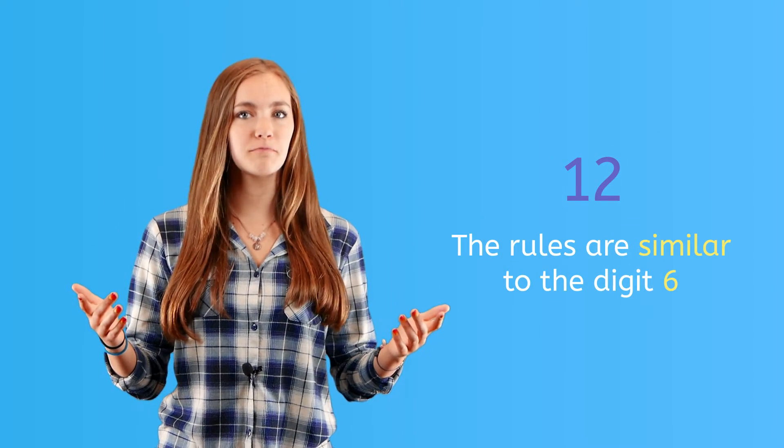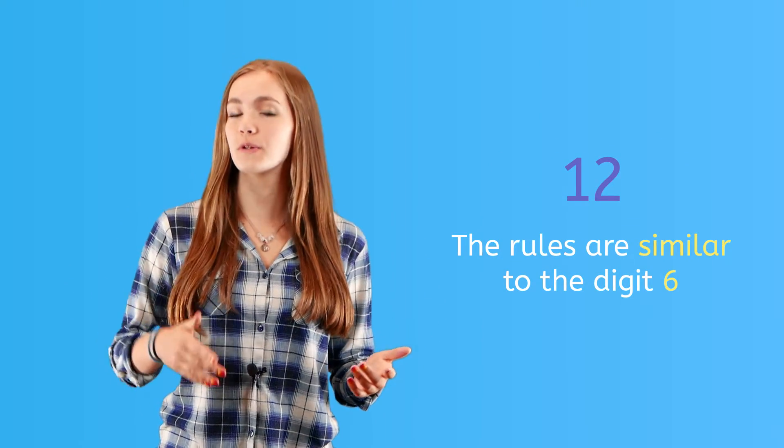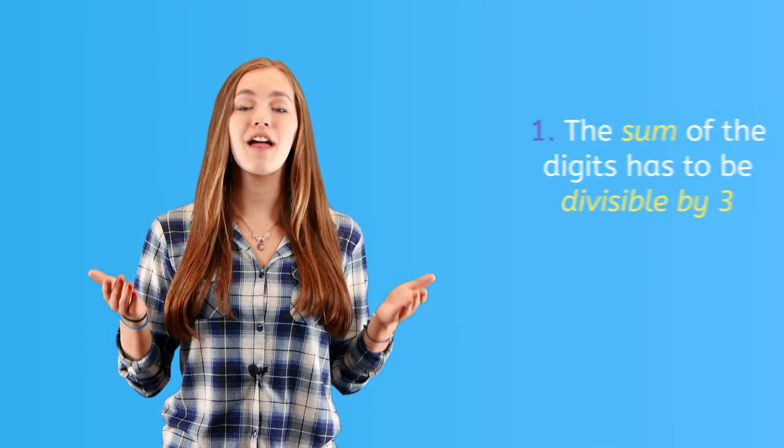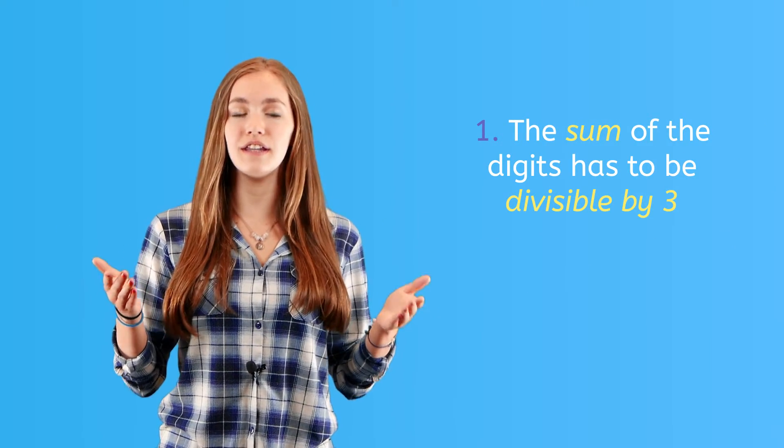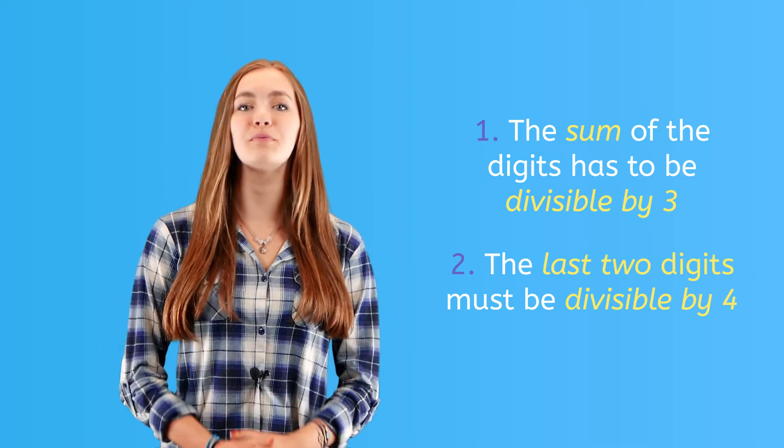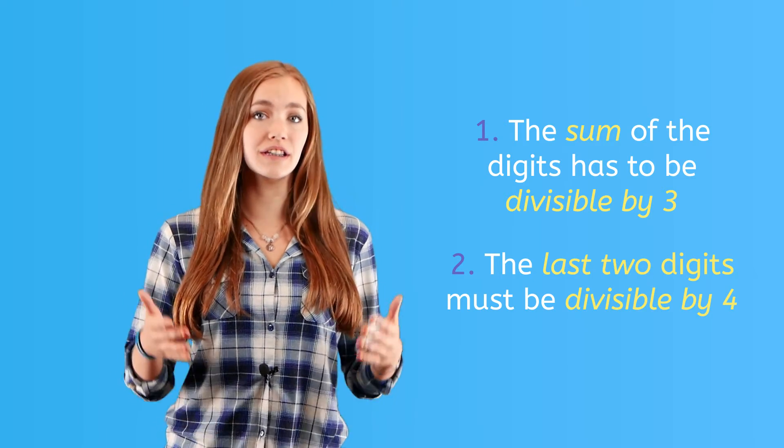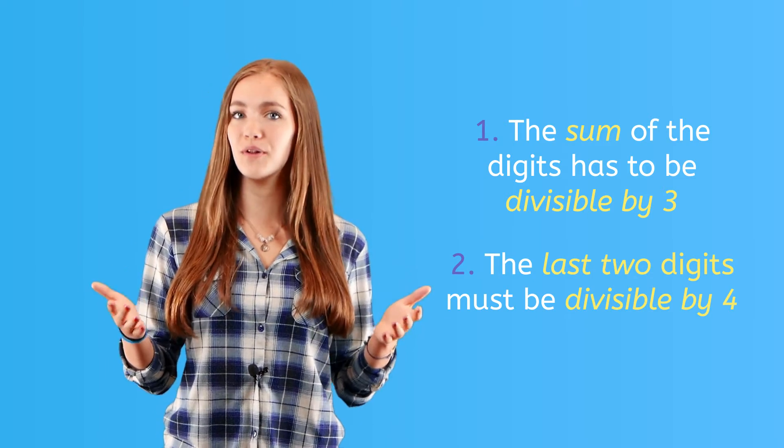The divisibility rule for the digit 12 is a lot like the rule for 6, except it relies on the rules for 3 and 4. This means that the digits in the dividend have to add up to a multiple of 3, and the last two digits have to be a multiple of 4. This is pretty confusing, so let's do some examples.